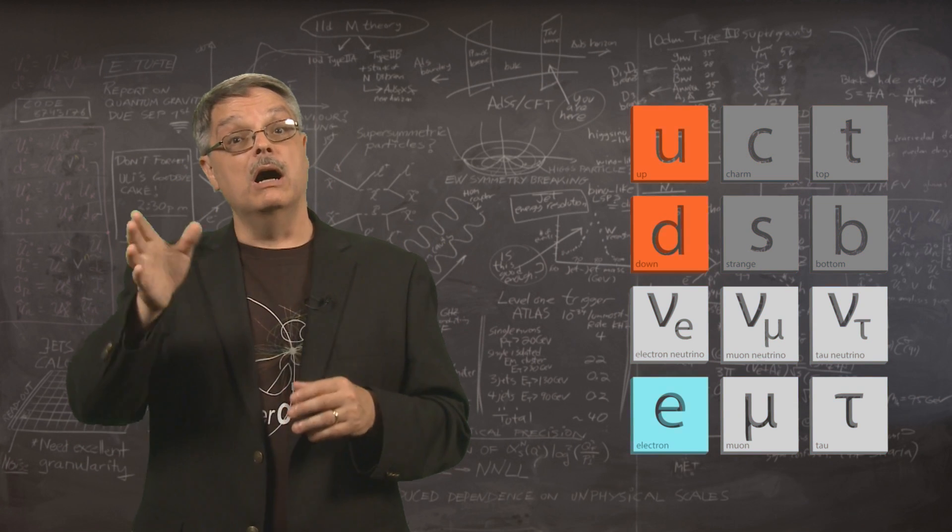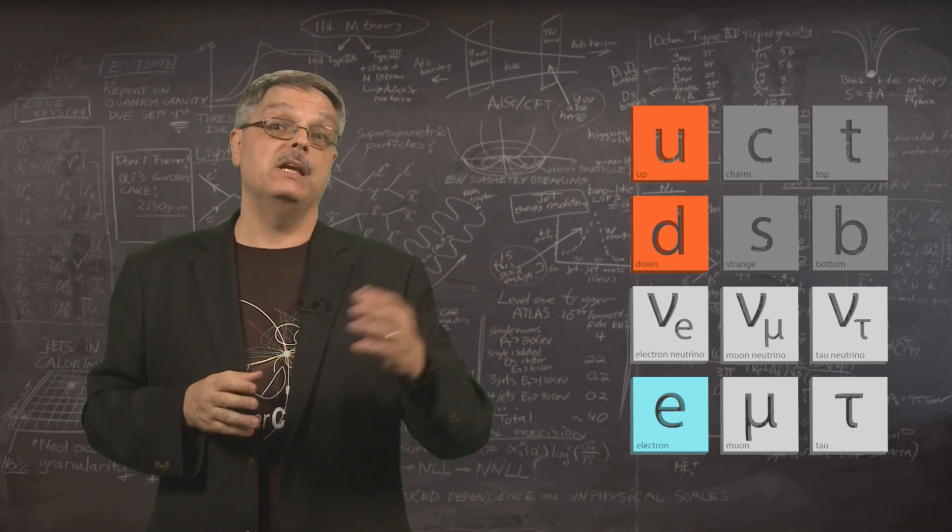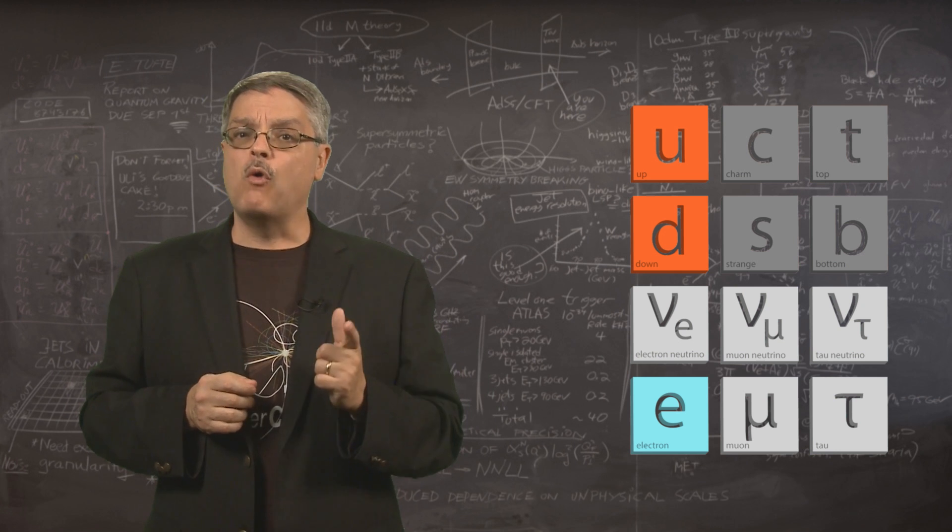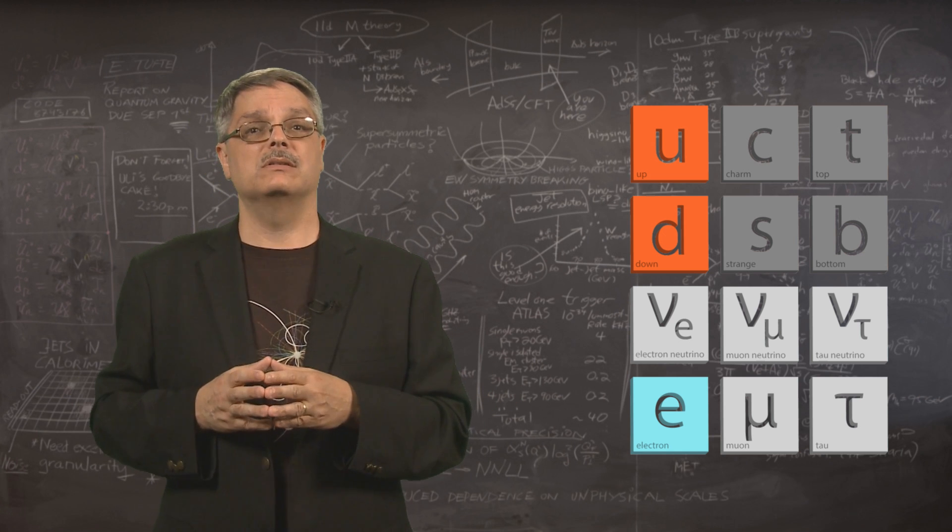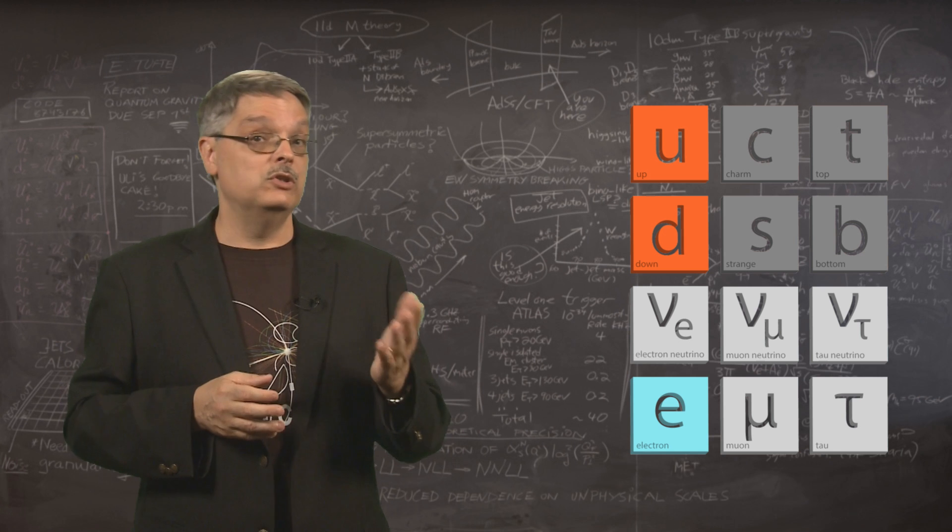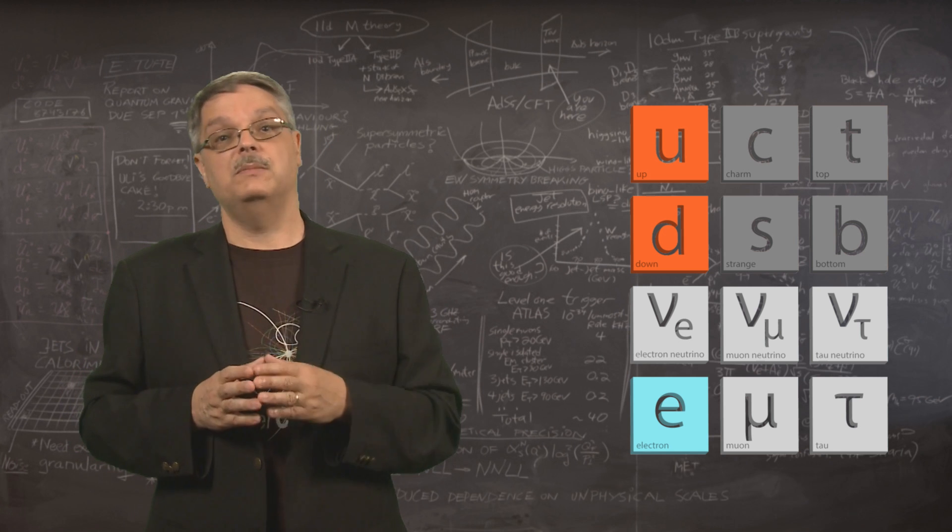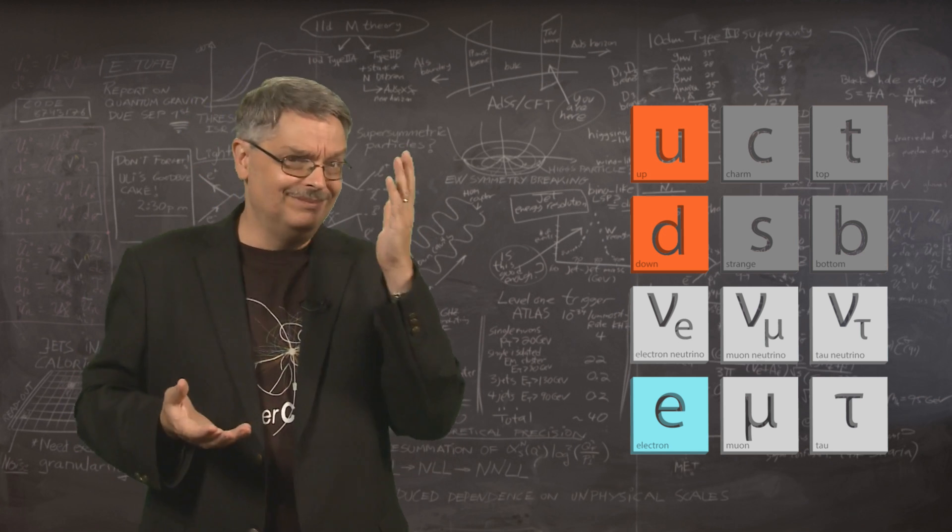So let's take another look at this graphic. We have up and down quarks and electrons that make up matter. So why are there four other kinds of quarks and two other charged leptons? When the muon was found, Nobel Prize winning physicist I.I. Rabi is reported to have said, who ordered that?